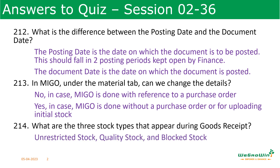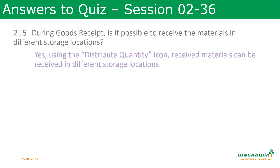What are the three stock types that appear during goods receipt? During goods receipt, we have options to select unrestricted stock, quality stock, or blocked stock — where the material has to go can be decided. During goods receipt, is it possible to receive materials in different store locations? Yes, using the distribute quantity icon, whatever material is received can be received in different store locations.